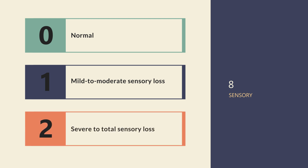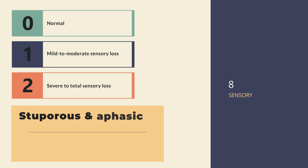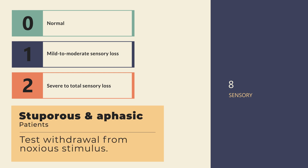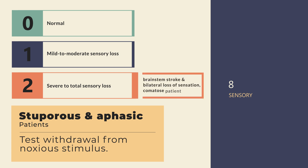Score 2 for severe to total sensory loss if the patient is not aware of being touched in the face, arm, and leg. In the obtunded, stuporous, or aphasic patient, test withdrawal from noxious stimuli to confirm total sensory loss before scoring 2. For patients with bilateral sensory loss due to a brainstem stroke and for comatose patients, automatically score a 2 for this item.